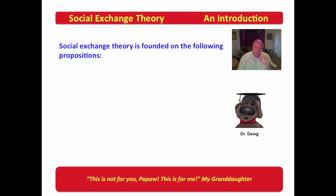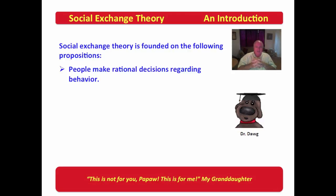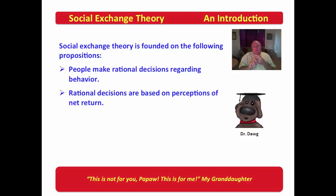Social exchange theory is founded on the following propositions. The first is that people make rational decisions regarding behavior. What Homan is saying is that the person makes a conscious decision. The individual is in charge of their own reactions and behavior. Social exchange theory also holds that rational decisions are based on perceptions of net return — what am I going to get out of this, what am I going to have to pay, and is it worth the cost?